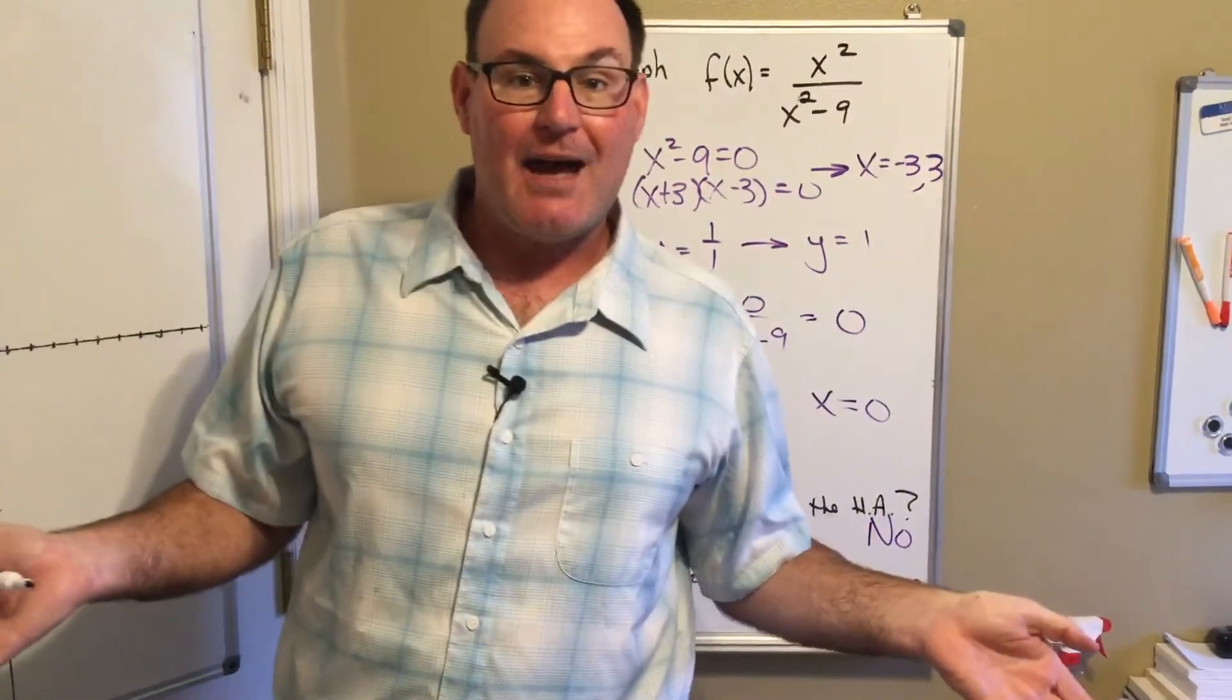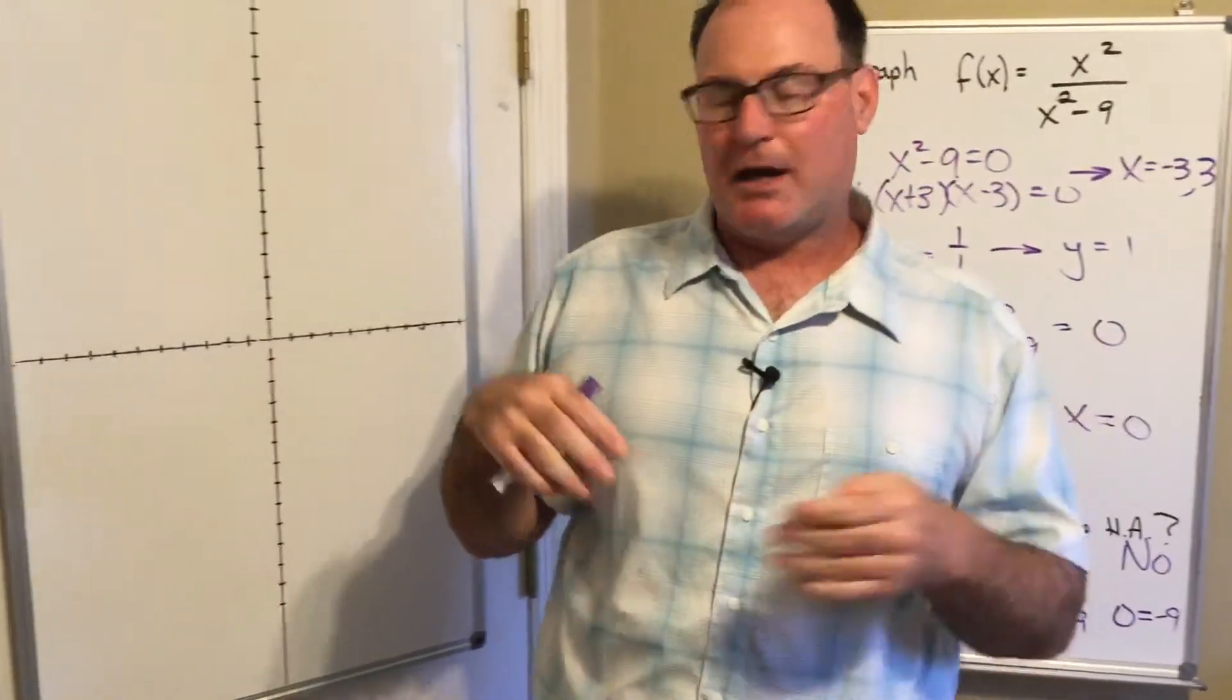Whenever you get a contradiction, whenever all the x's cancel, the answer to this is no - it is not going to cross the horizontal asymptote. So let's take the information I have and we will come back and fill in any gaps we have.